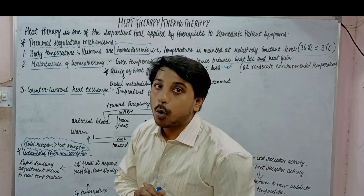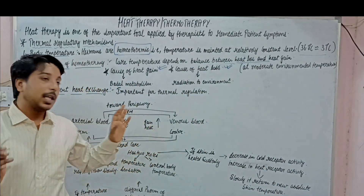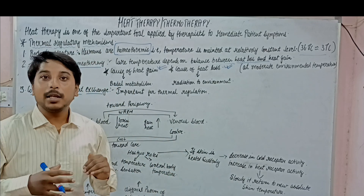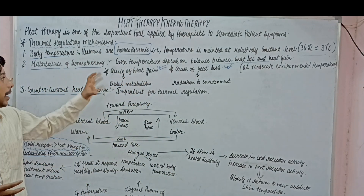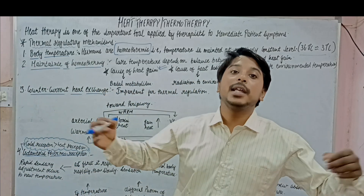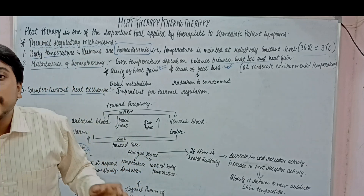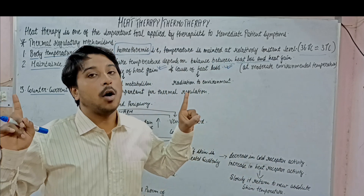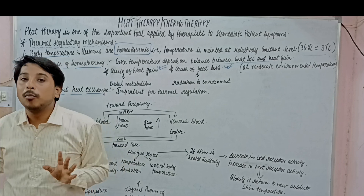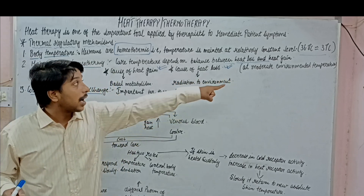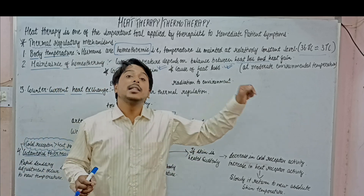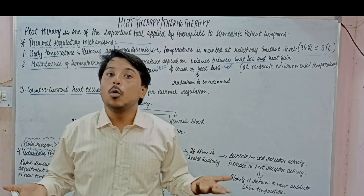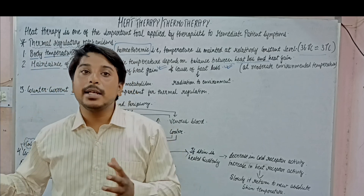This heat loss via radiation occurs at normal environmental temperature. For example, I am standing now, walking in my room, and there must be some metabolism occurring — I am radiating some heat energy to the environment. Heat is produced in my body by basal cell metabolism and I am radiating it all the time whenever it is needed to maintain homeostasis. This occurs at moderate environmental temperature, which means the environmental temperature is lower than our body temperature. Heat energy is transferred from a higher level to a lower level.